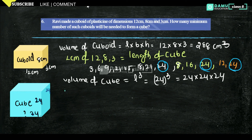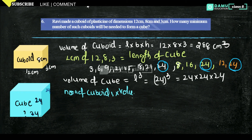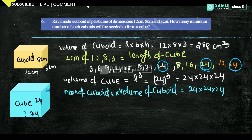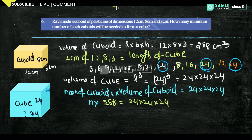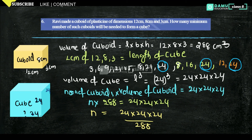Now, volume of cube equals number of cuboids into volume of cuboid. So number of cuboids into 288 will be equal to 24 into 24 into 24. Therefore number of cuboids equals 24 into 24 into 24 divided by 288.